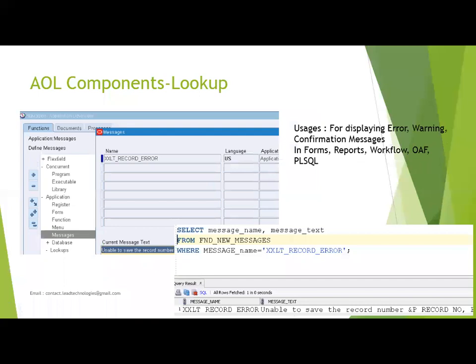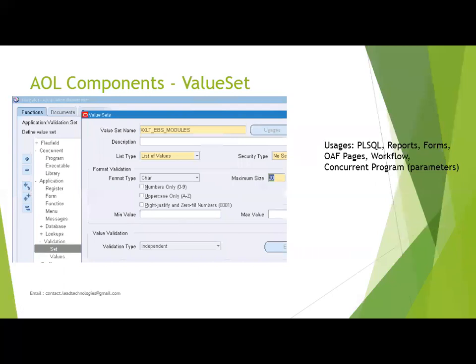Another important AOL component is Messages. Whenever you get any confirmation, error, or warning, these are part of AOL components. We never hard-code message content directly — the reason is you may want to modify the message text or include parameters. Instead, hard-code only the message name so you can always modify the message text later. The table in which messages are stored is FND_NEW_MESSAGES. These are provided by the AOL module and used across most other applications, reinforcing why it's called the foundation module.